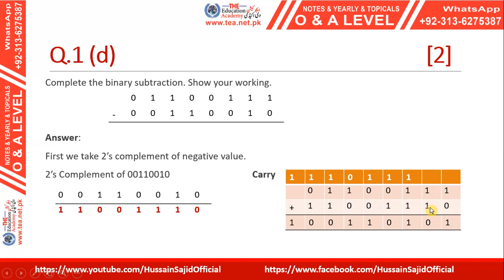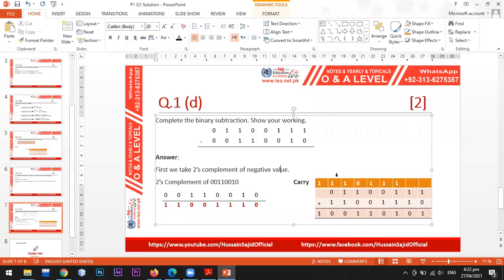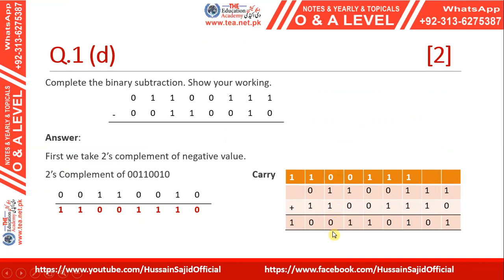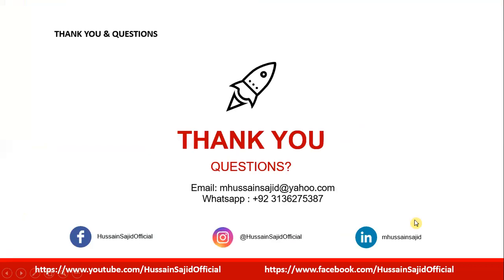Now we add the first value to the two's complement of the second. One plus one gives zero with a carry; three ones give one with a carry; one plus one gives zero with a carry; continuing through each column — noting one carry entry was written by mistake and is not supposed to be there — we complete the addition. The final result is the binary subtraction of the two numbers, obtained by adding the two's complement.